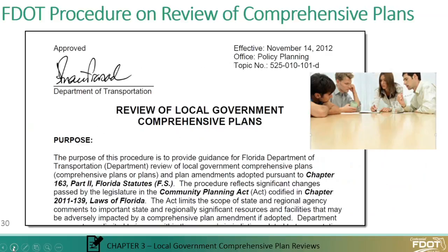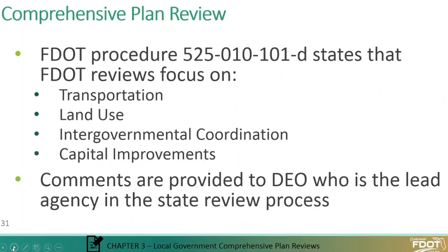DEO is not the only state agency involved with growth management. There are others such as FDOT, which is involved from the transportation planning side. Under Section 163.3184, Florida Statute, it defines all of those agencies such as FDOT that would be coordinating with DEO in terms of comprehensive planning. FDOT has a published procedure, procedure number 525-010-101-D, that covers the review of comprehensive plans for FDOT staff. This procedure identifies areas of focus for DOT comprehensive plan reviewers, as well as coordination and submission procedures for DOT reviewers working with DEO on comprehensive plan amendments.